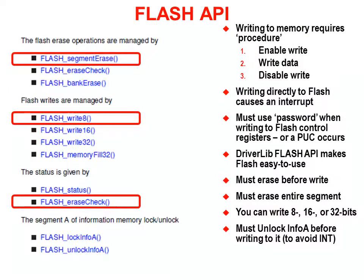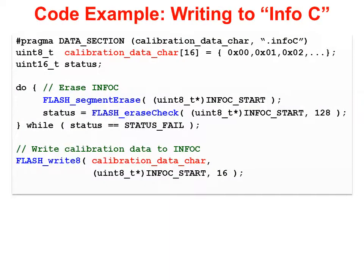Driver Library makes flash relatively painless to use. It wraps up the procedure and all the difficulties into a few easy-to-call API functions. We've highlighted three functions here that we'll see in the code on the next slide. As an example, say we wanted to write some calibration data to Info C — we'd use three Driver Library functions: one to erase the flash, two to verify it's been erased properly, and three to use the flash write functions to write the data itself. This function takes care of all the nitpicky rules needed for writing to flash.